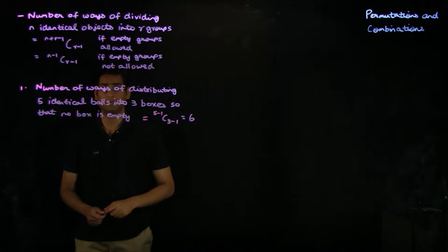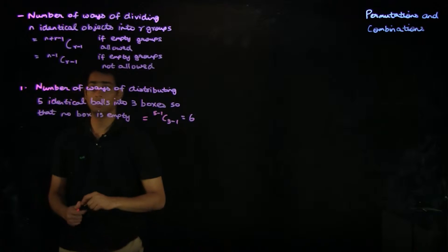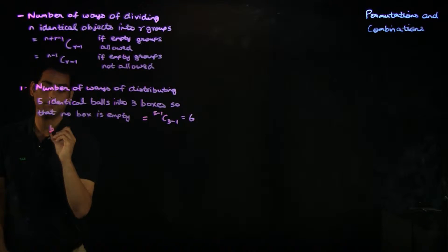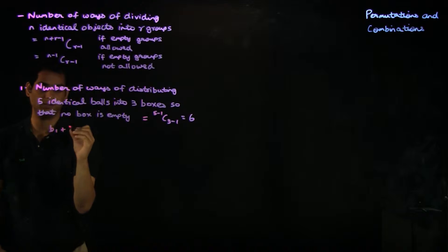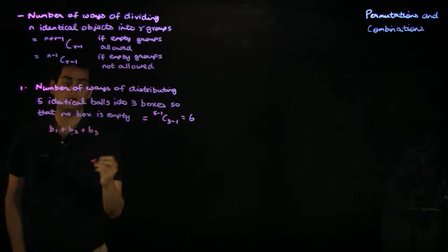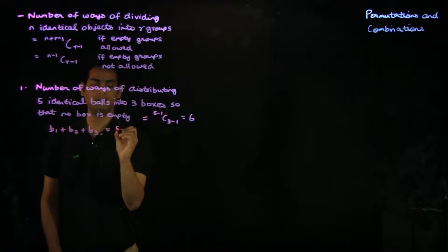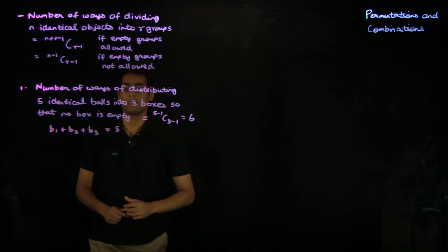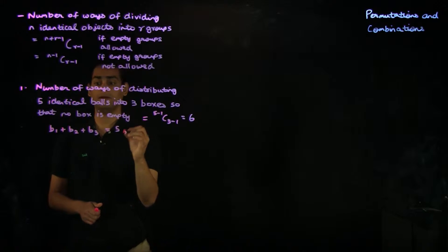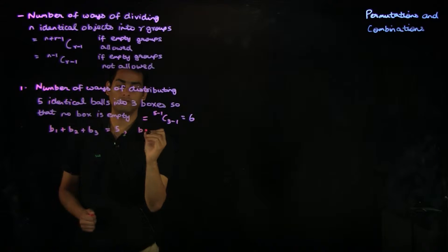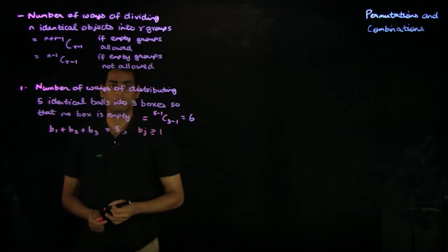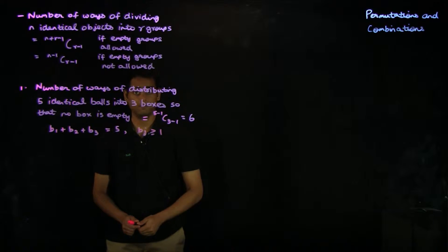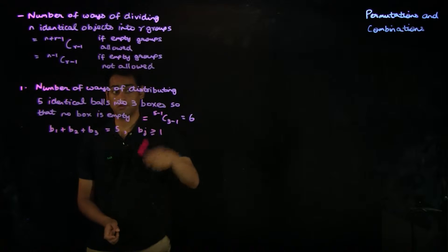Another way to think about this problem: suppose b1 is the number of balls in box 1, b2 is the number of balls in box 2, b3 is the number of balls in box 3. We want b1 plus b2 plus b3 to equal 5, since we want to divide five identical objects into three groups. We also have the condition that no box is empty, so bj must be greater than or equal to 1 for all j. The solution of this system of equations, derived using a generating function based approach, should also give you the result 6.